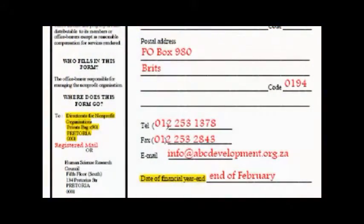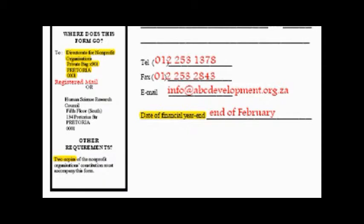On the left-hand side there is the address for the director for non-profit organizations: Private Bag X901, Victoria, 001. And then there is also the physical address. At the bottom they also say that there must be two copies of the constitution.